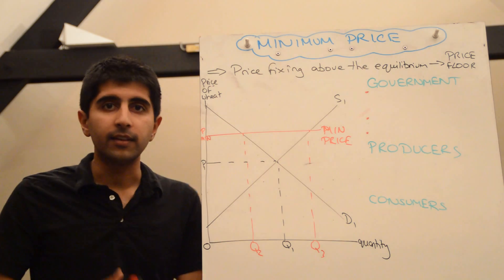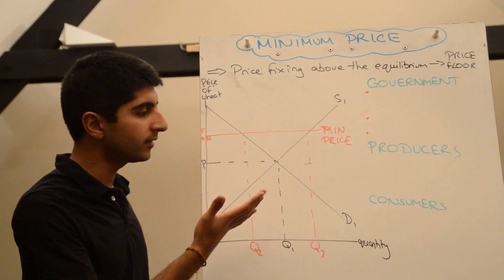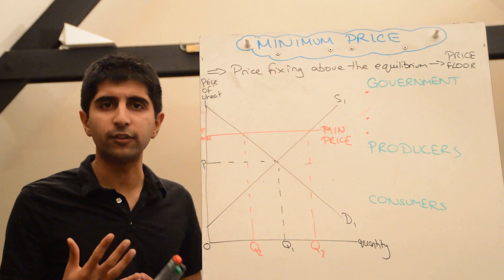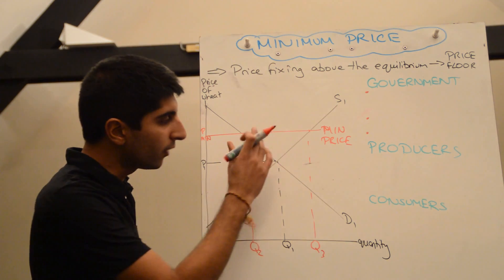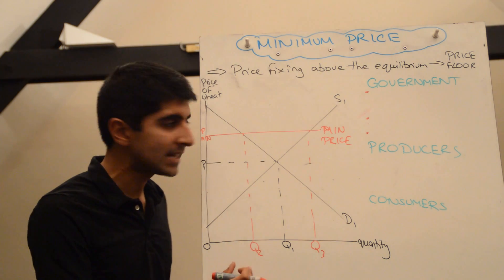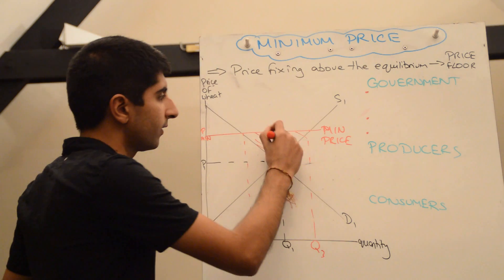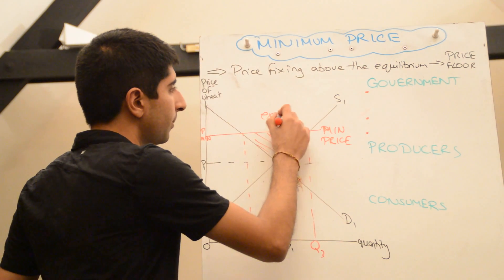It makes sense that there is a greater incentive now to supply wheat with a higher price, and demand has contracted because at a higher price, why would you want to buy so much? So straight away, supply is more than demand. There is going to be an excess supply problem here, indicated by this triangle.